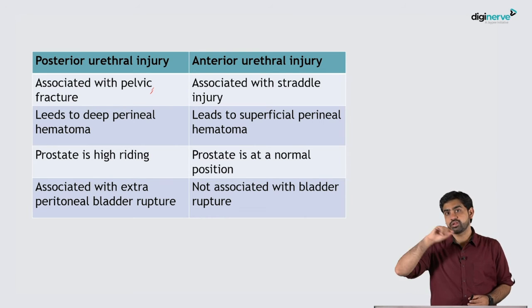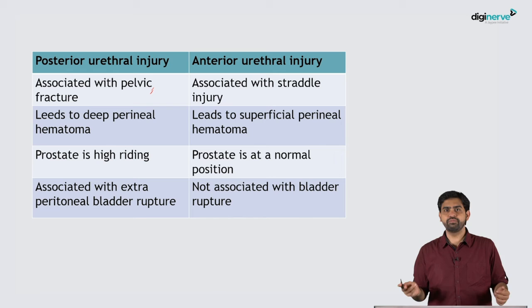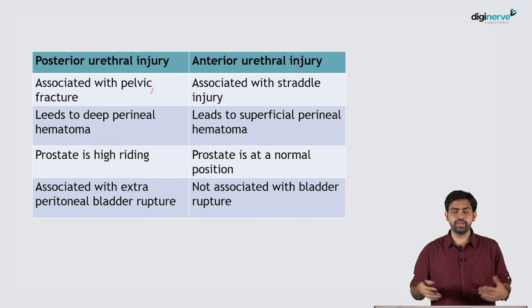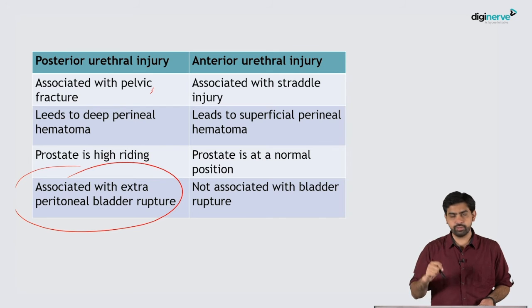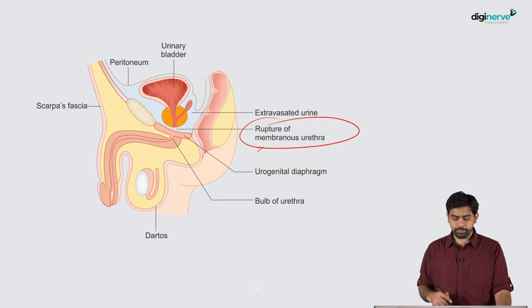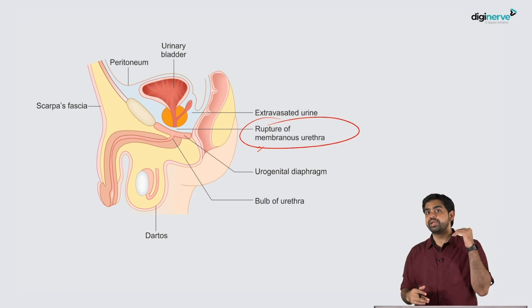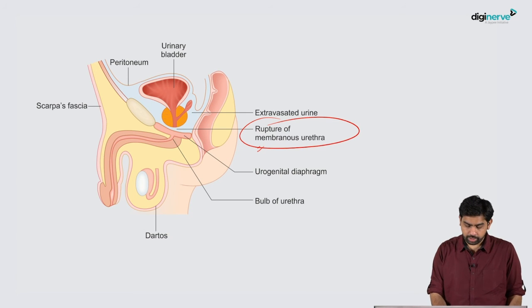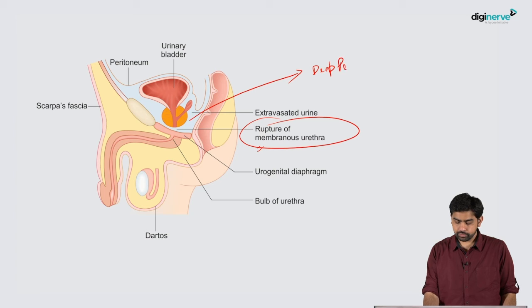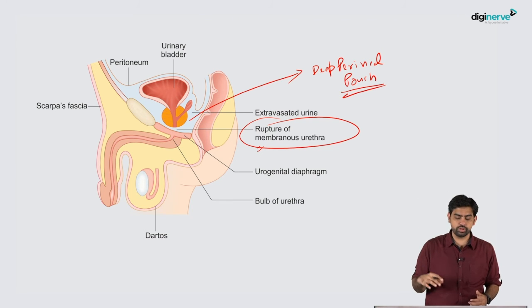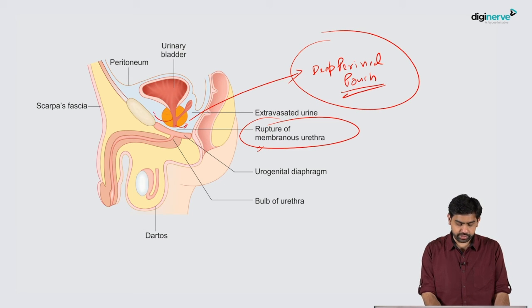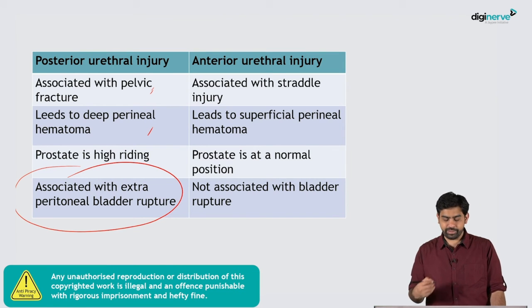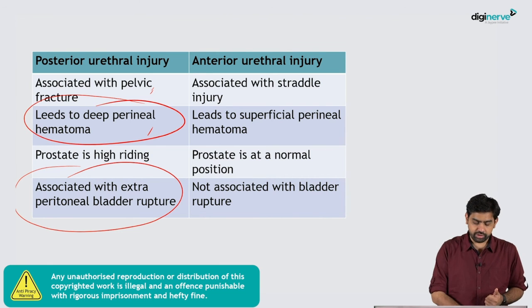In bladder trauma, extraperitoneal bladder rupture is associated with pelvic fracture, and posterior urethral injury is nearby, so they are often associated. With posterior urethral injury, urine seeps into the deep perineal pouch, resulting in a deep perineal hematoma.